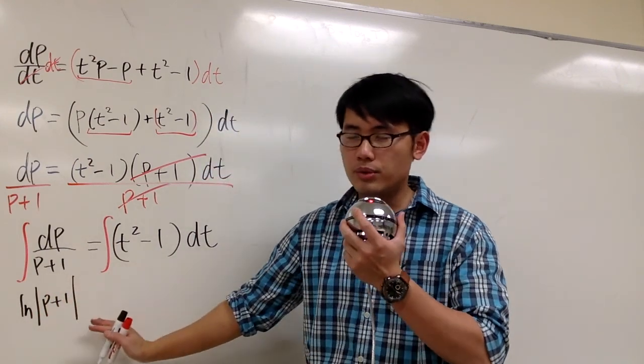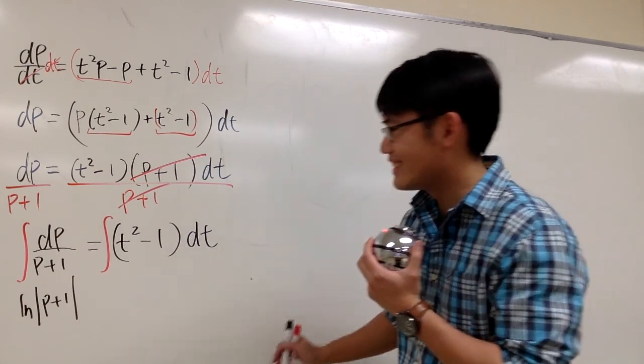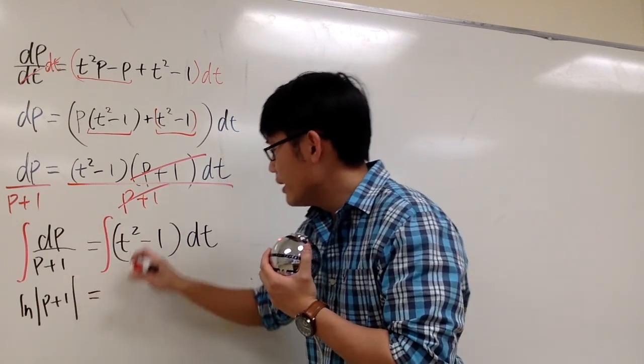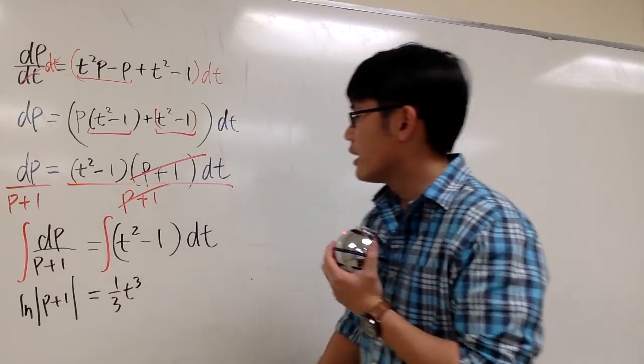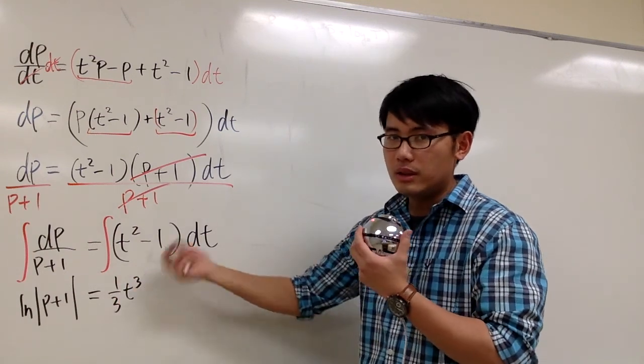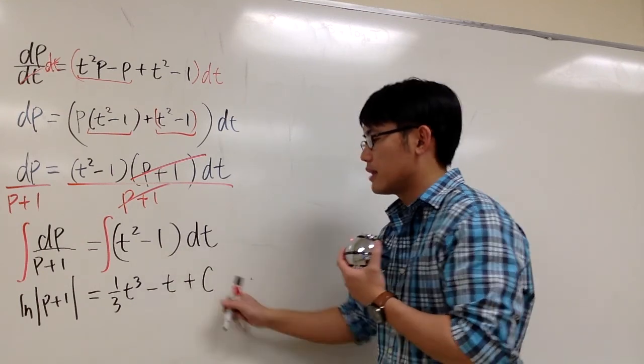And we don't need to worry about to put a plus c on the left-hand side. Just worry to put a plus c on the right-hand side. This is equal to integral of t squared is 1 third t to the third power, and then minus 1, integrate that, we have minus t. And then we put plus c, constant on the right-hand side.